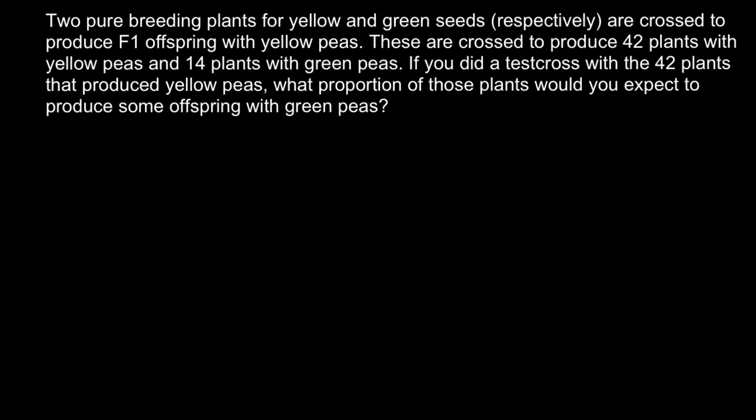Because this is simple Mendelian genetics, two alleles can control the color of the seeds, and that means we can get three types of genotypes: one can be homozygous dominant, another can be heterozygous, and the last one can be homozygous recessive.